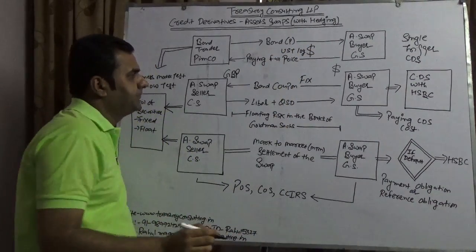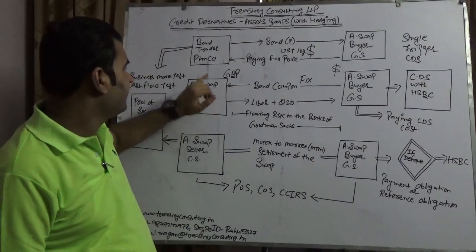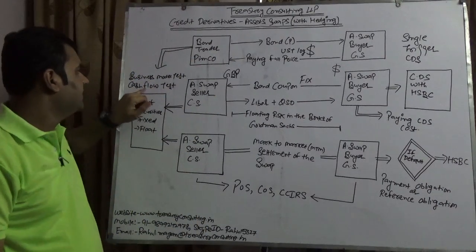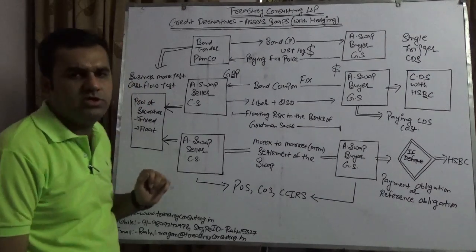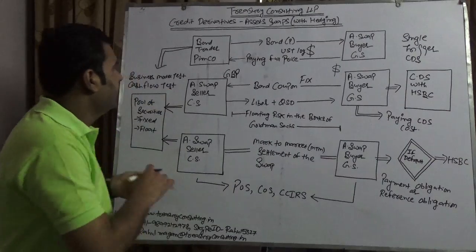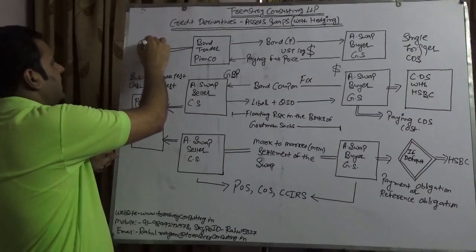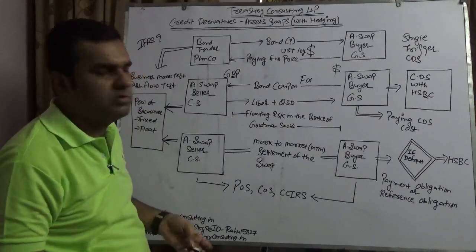On the other end, they are getting an asset. If Goldman Sachs wants to keep it amortized, as per IFRS 9 they have to pass the business model test and cash flow characteristics test. Now, what happens? They are taking a hedge with HSBC.